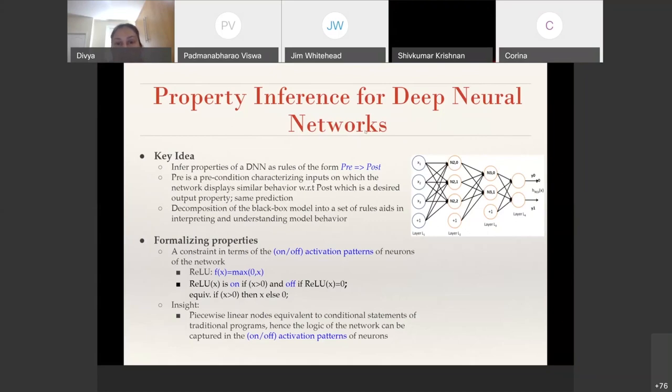The key idea of this work is given a trained DNN model, we aim to infer properties of that model as rules of the form pre implies post, where pre is a precondition characterizing inputs on which we expect the network to display similar behavior with respect to post, which is a desired output property such as having the same prediction for a classifier network. The idea here is decomposition of a complex black box model into a set of rules aids in interpreting and understanding the model behavior better.